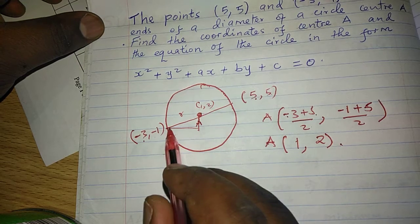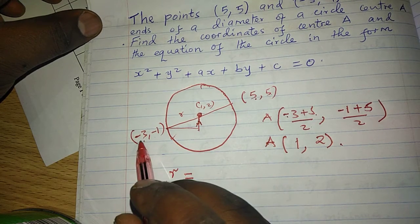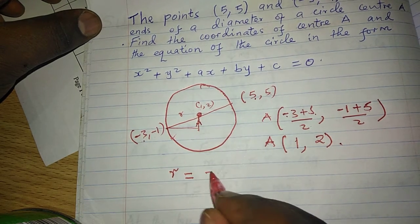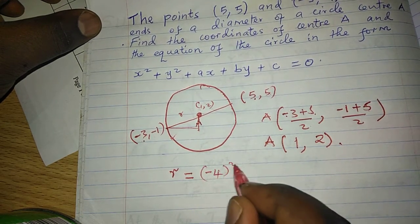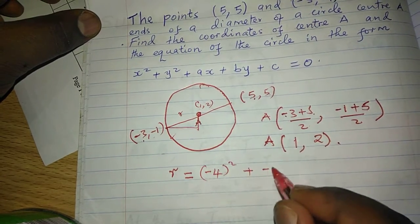this radius r by taking the length of this side which will be (-3 - 1) squared, which is (-4) squared, plus (-1 - 2), which is (-3)